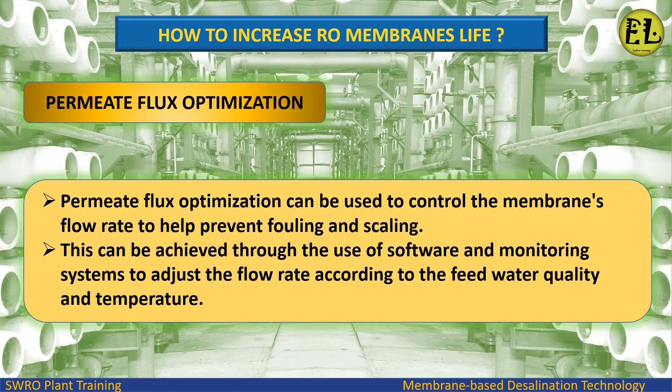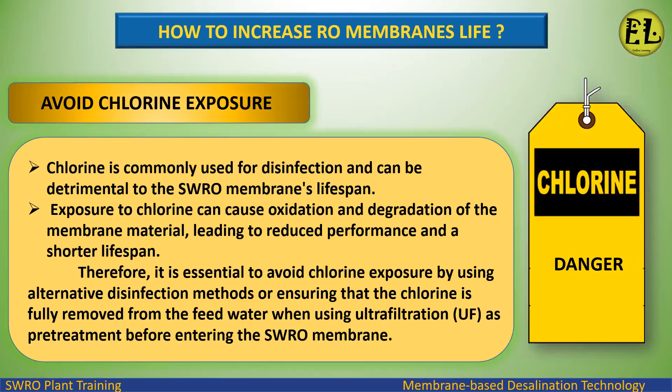Permeate flux optimization can be used to control the membrane's flow rate to help prevent fouling and scaling. This can be achieved through the use of software and monitoring systems to adjust the flow rate according to the feed water quality and temperature.